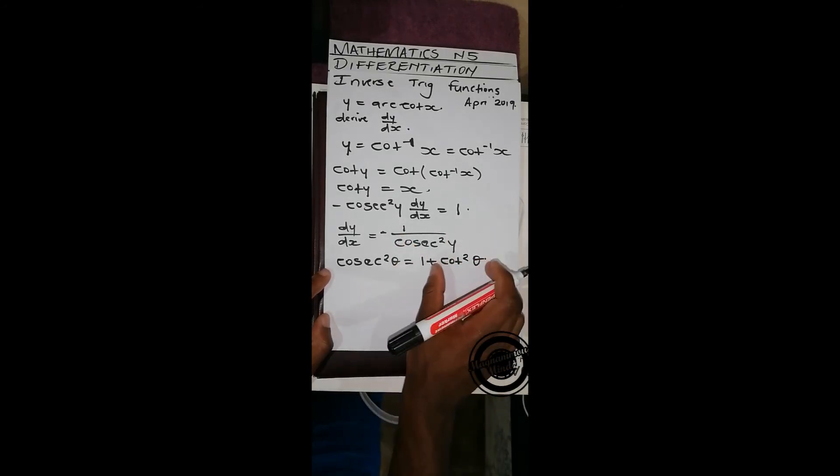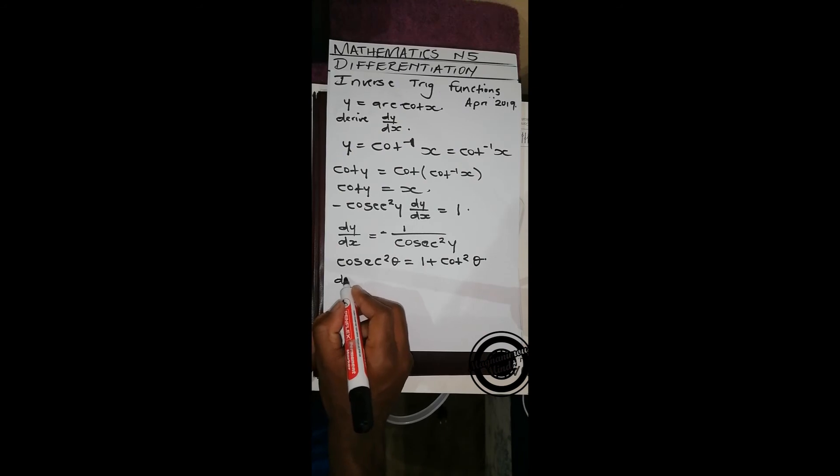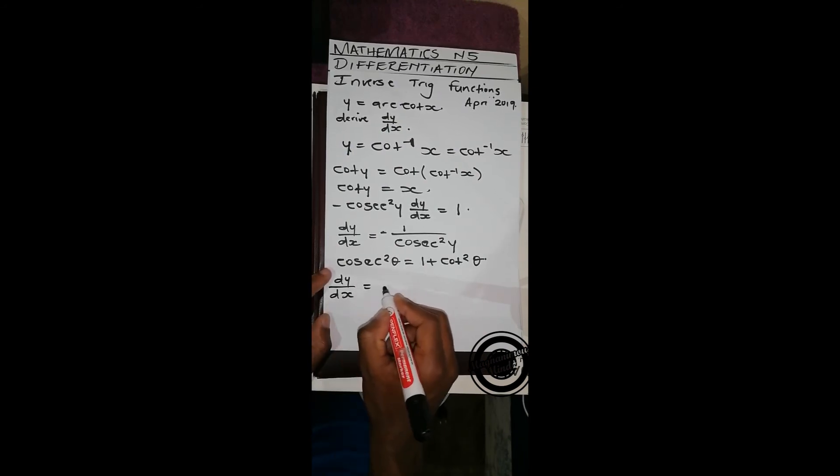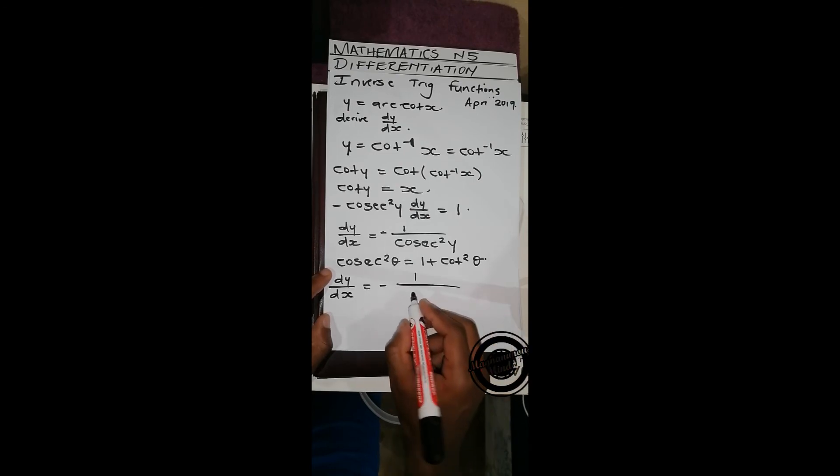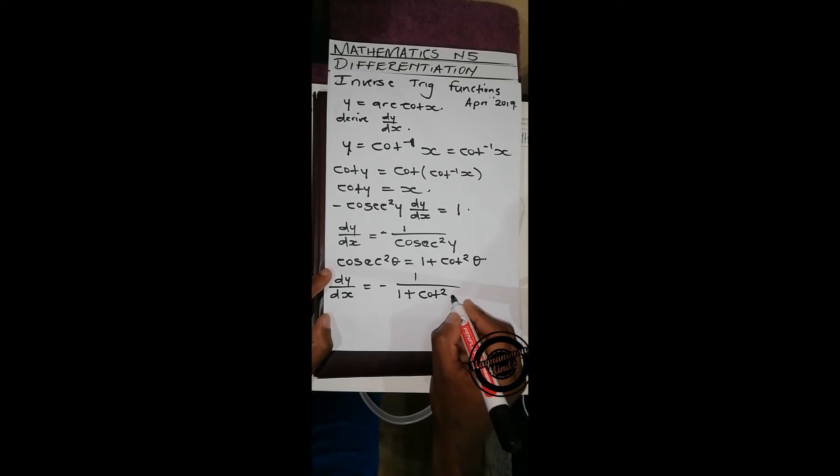So we're going to replace this, and we'll have dy over dx equals minus 1 over 1 plus cot squared y.